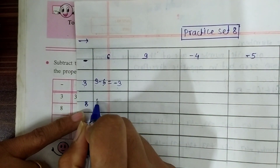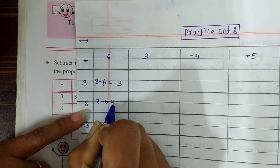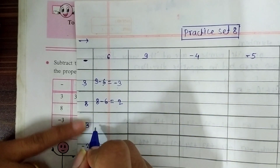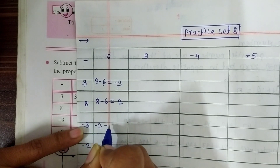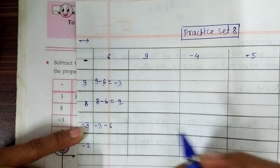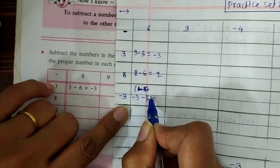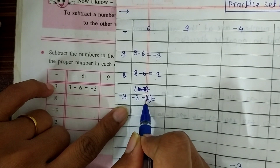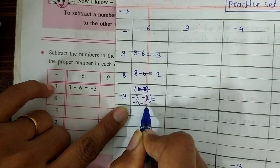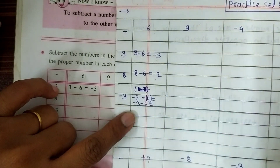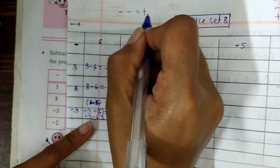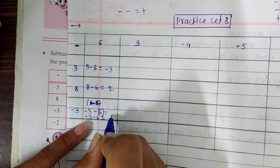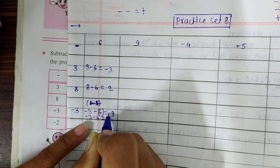Now, 8 minus 6. The answer is 2, and the sign is plus 2. Next, minus 3 minus 6: here minus 3 minus plus 6 — minus plus gives a minus sign — means minus 3 minus 6. For the sign, minus minus is plus, so we make addition: 6 plus 3 is 9, and we give the common sign, which is minus 9.